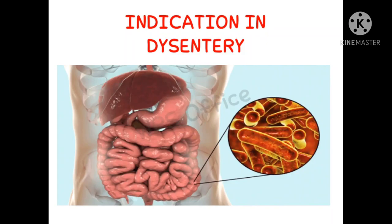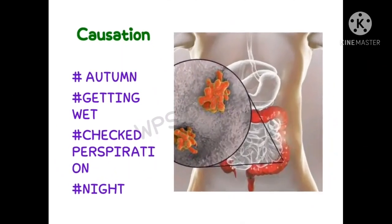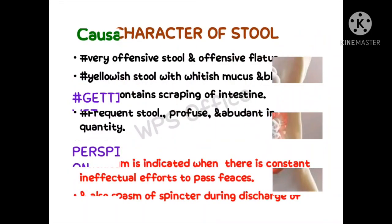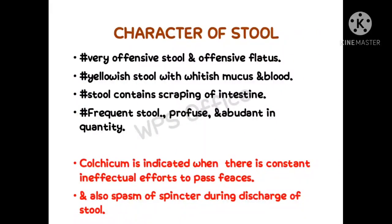We will study the indications in dysentery. Now, the causation of dysentery — it mostly occurs in autumn, due to getting wet, checked perspiration, and during night.